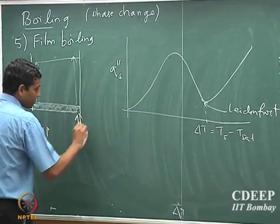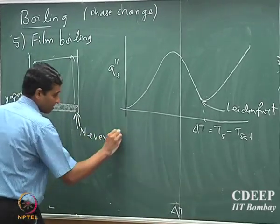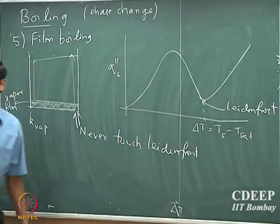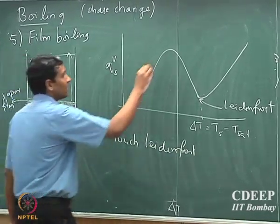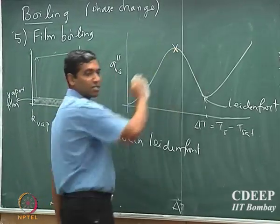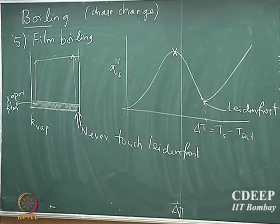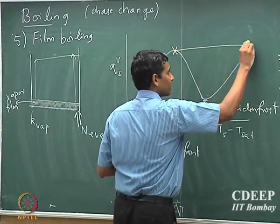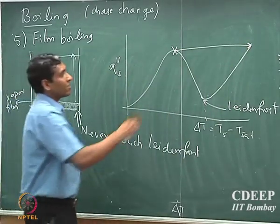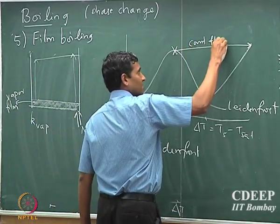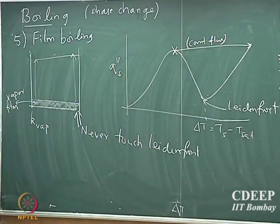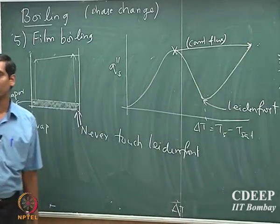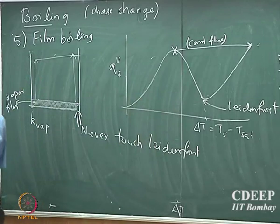You never want to reach this stage of having a film at the bottom, because the temperature difference can be significantly higher — it is not the most favorable condition. You never want to touch the Leidenfrost point. What is typically done is that once the fluid reaches the maximum on the boiling curve, the best way to boil a fluid is to slowly reach the maximum and then maintain a constant flux condition to ensure most of the fluid is boiled — it is too much waste of energy otherwise.